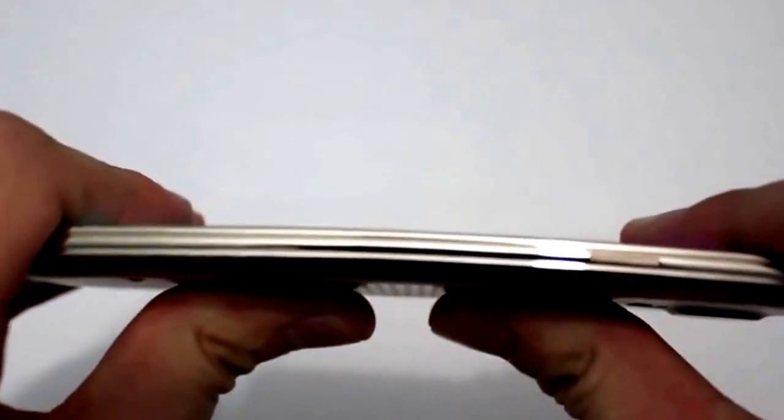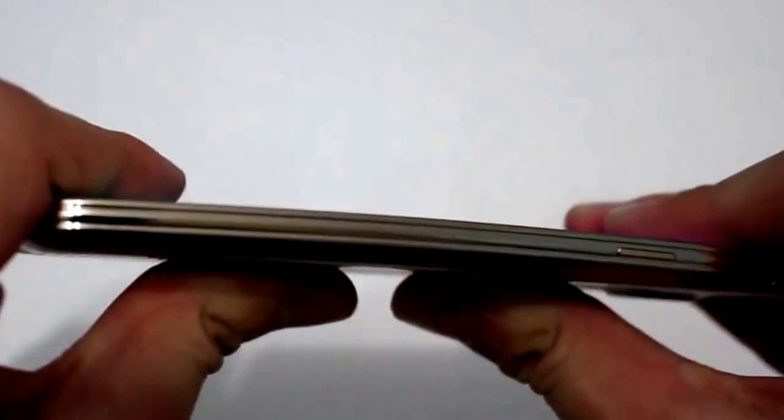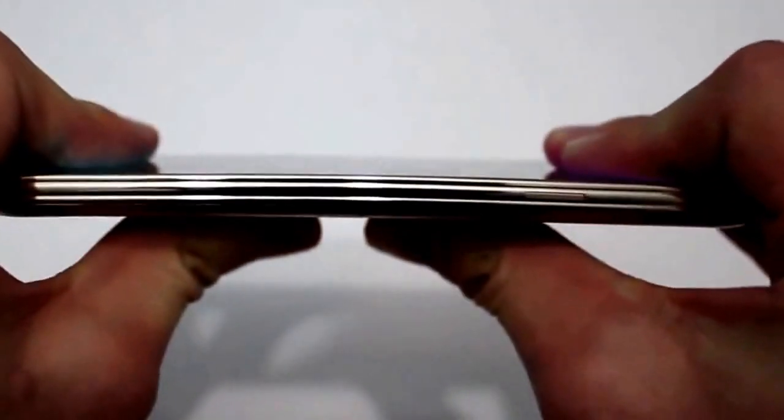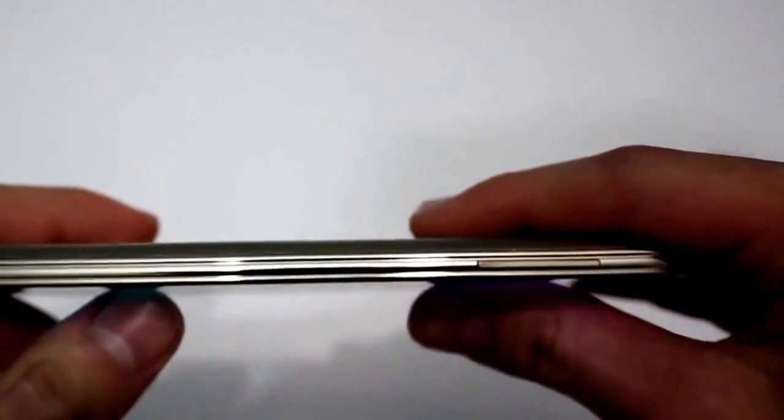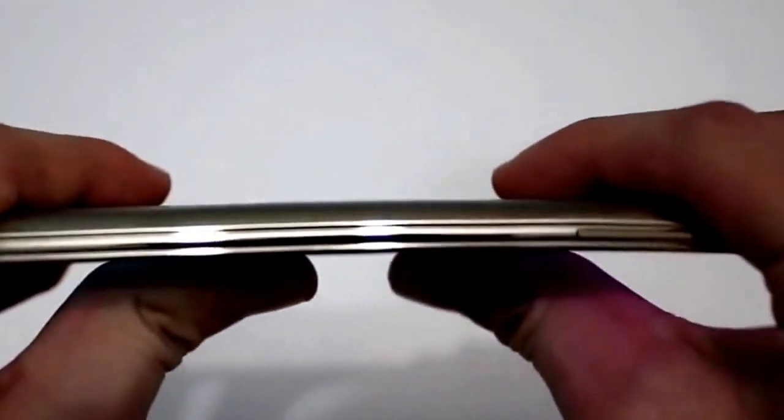It's true that the phone gets bent just a little bit, it's not even noticeable on the camera. You can see just a little bit that the phone actually gets bent, but once I release the phone it goes back to normal and it doesn't have any problems.